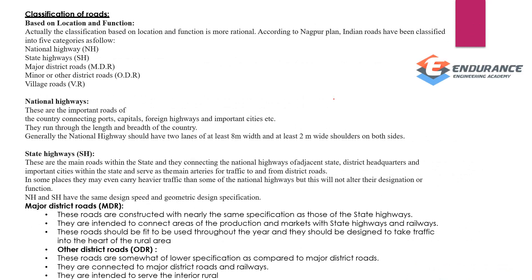The next part is classification of roads. First, based on location and function. According to the Nagpur Plan, India has five categories: National Highway, State Highway, Major District Road, Minor District Road, and Village Road. National highways connect ports, capitals, foreign highways, and important cities. On national highways, there are two lanes at least 8 meters wide, and each shoulder is at least 2 meters wide.